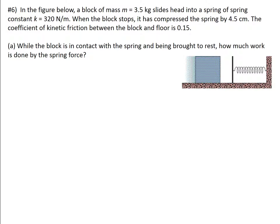In the figure below, a block of mass m equal to 3.5 kilograms slides head-on into a spring of spring constant k equal to 320 newtons per meter. When the block stops, it has compressed the spring by 4.5 centimeters, which is 0.045 meters. The coefficient of kinetic friction between the block and the floor is 0.15, so this is our mu-k value.